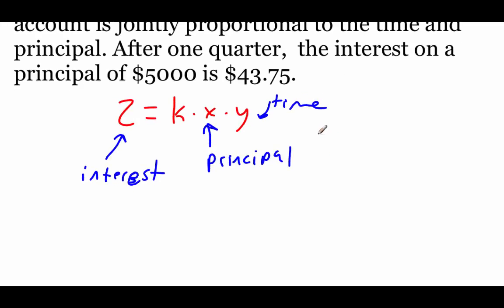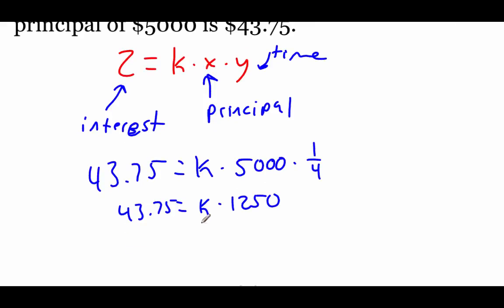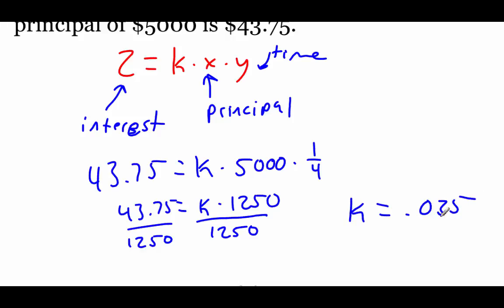Plugging numbers in: 43.75 equals k times 5,000 times one-quarter. Taking 5,000 times one-quarter gives 1,250, so 43.75 equals k times 1,250. Dividing both sides by 1,250 gives k equals 0.035. Going back to the equation and plugging in k, our final answer is: interest equals 0.035 times principal times time. That's essentially the interest rate times principal times time.